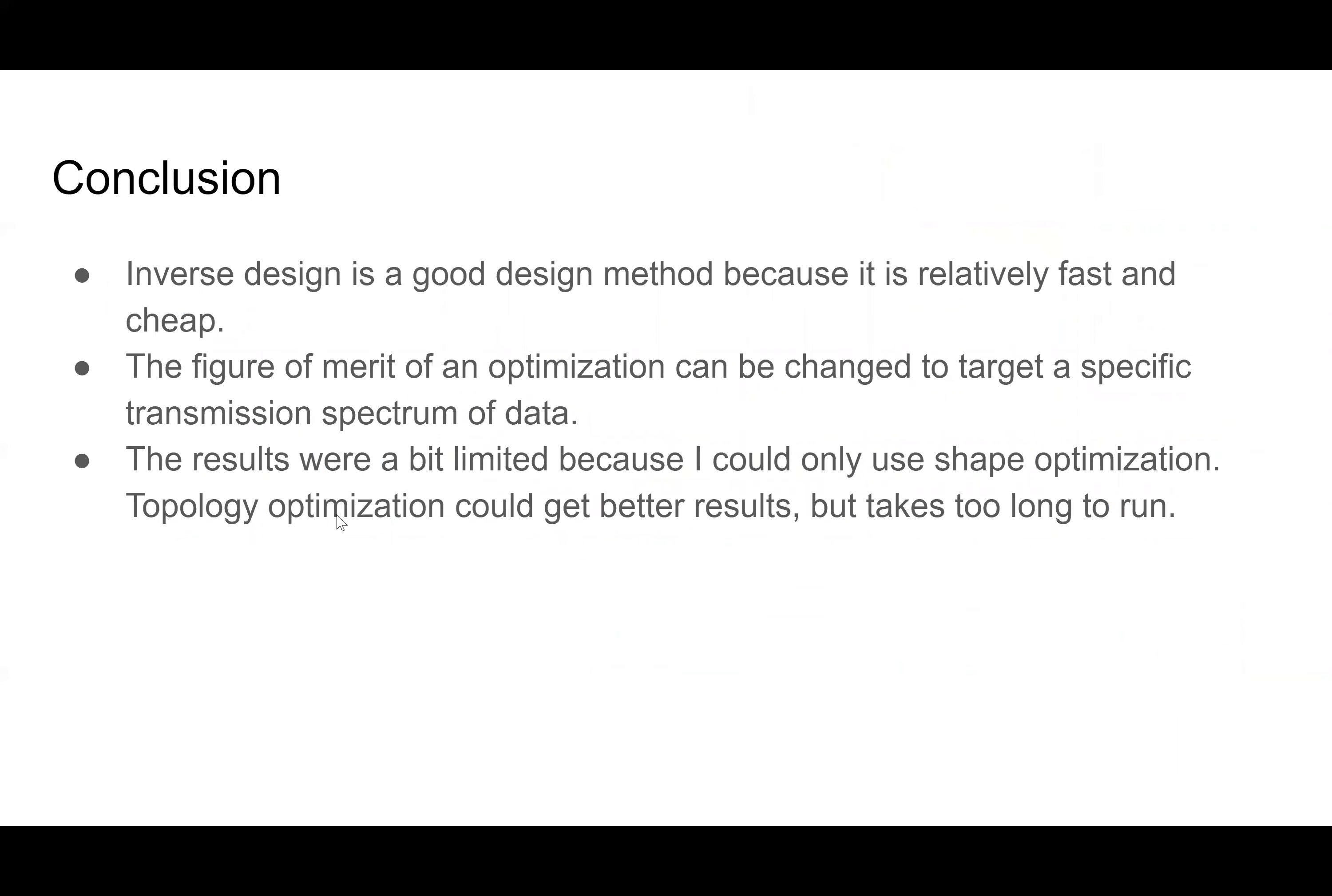So some things I found is inverse design is a good design method because it's relatively fast and cheap. And especially for photonics, because the physics with light can get very complicated. The figure of merit of an optimization can be changed to target a specific transmission spectrum of data, which I showed in my results. One thing I will say about my results were a bit limited because I could only use shape optimization, which is where I give it those lines and it can move those lines around, as opposed to topology optimization, which is where I give it a box and it decides which pixels in the box will have a material versus air. But unfortunately, topology optimization, which I do think could get better results, it just took too long to run on my computer. So in the interest of time, I used shape optimization and accepted that my results would not be as good as they could be.